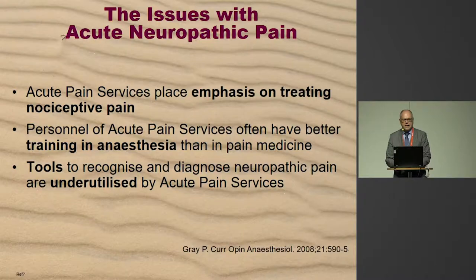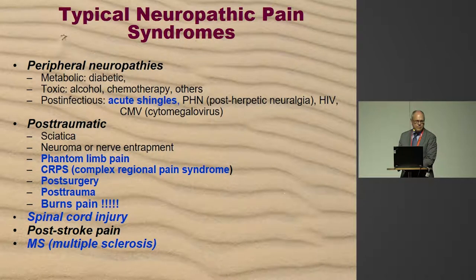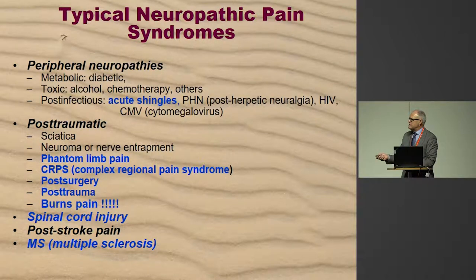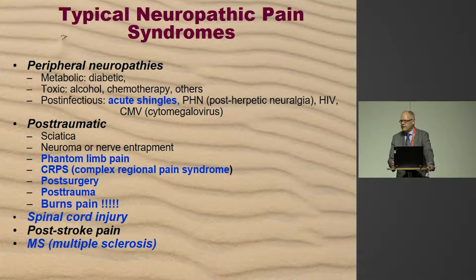If you think about a list of neuropathic pain states, I've highlighted everything which could theoretically appear in an emergency department or on a ward — from acute shingles in an internal medicine ward to phantom limb pain, CRPS, post-surgery, post-trauma, and in particular burns pain, spinal cord injury, and multiple sclerosis, where acute neuropathic pain is often the first presentation of an undiagnosed MS. So it is not as rare as we actually think.